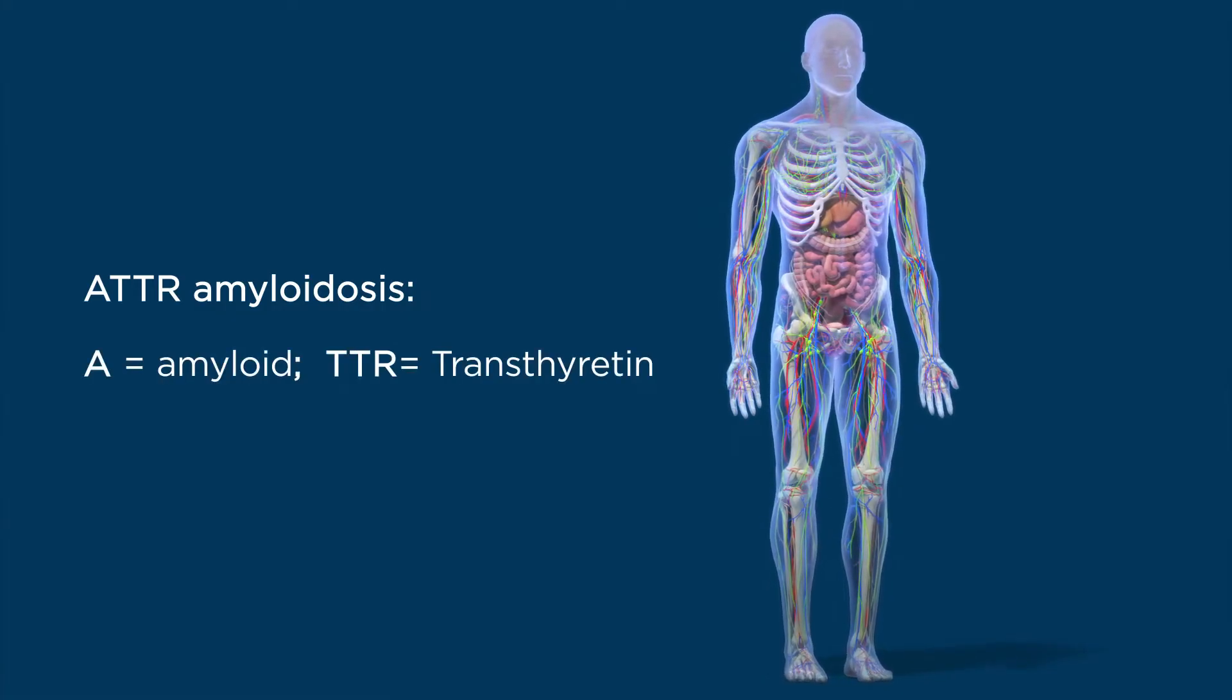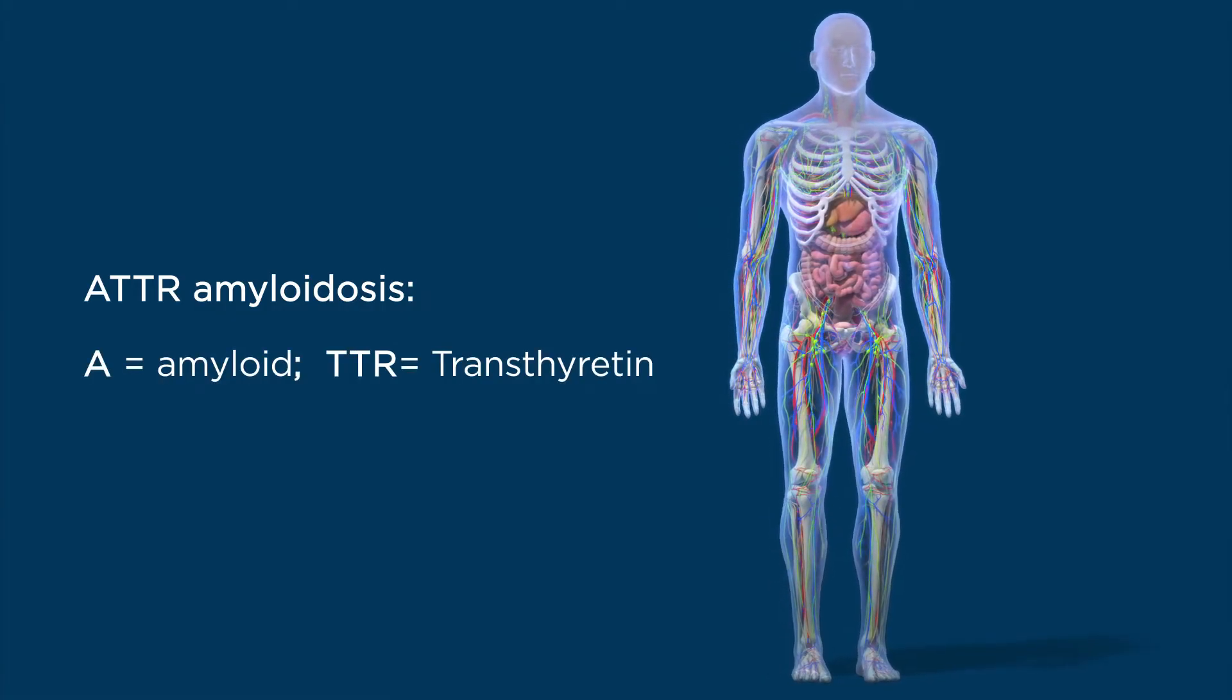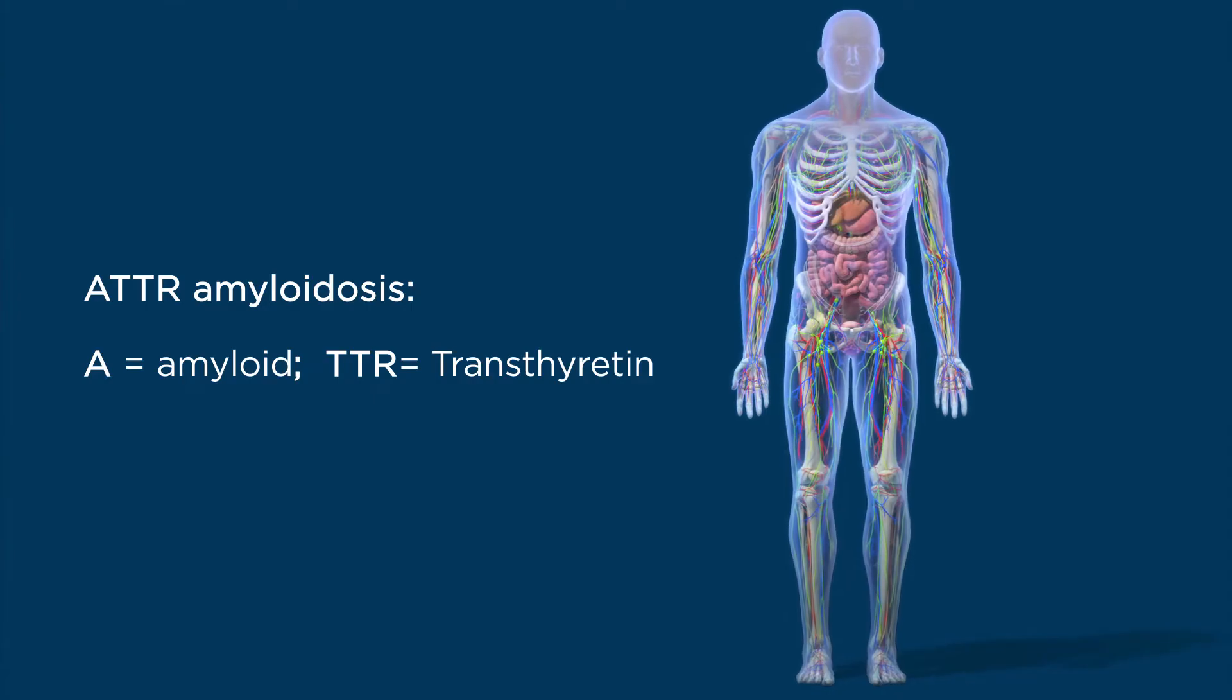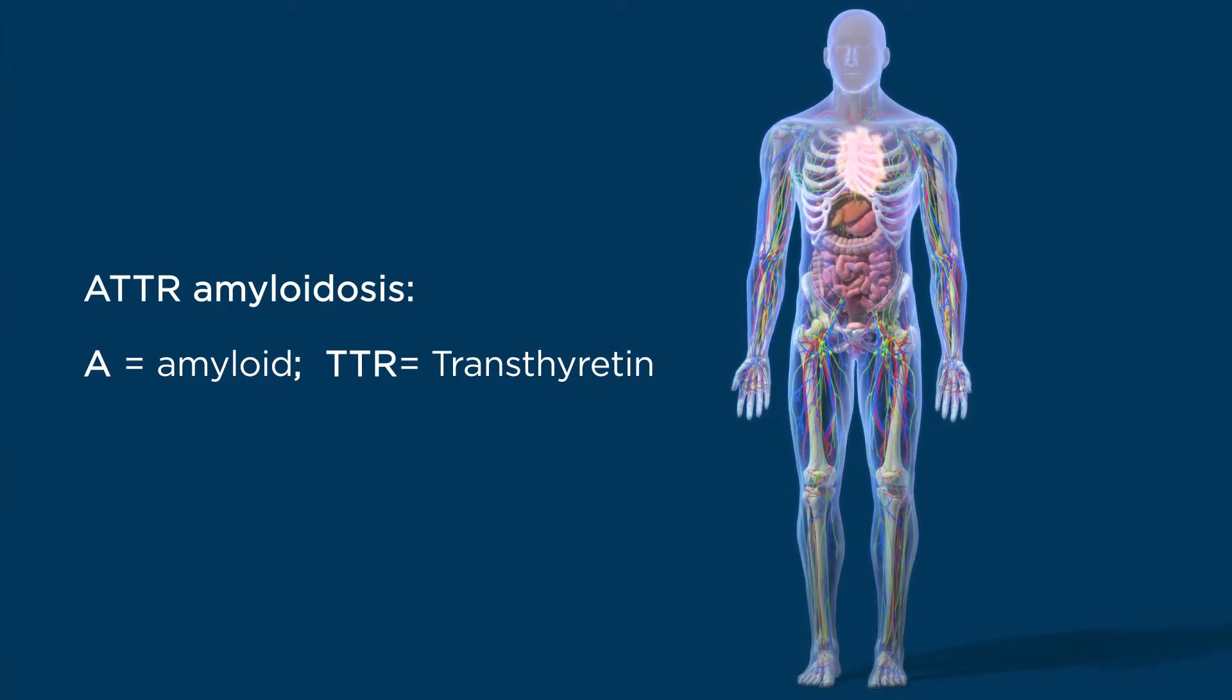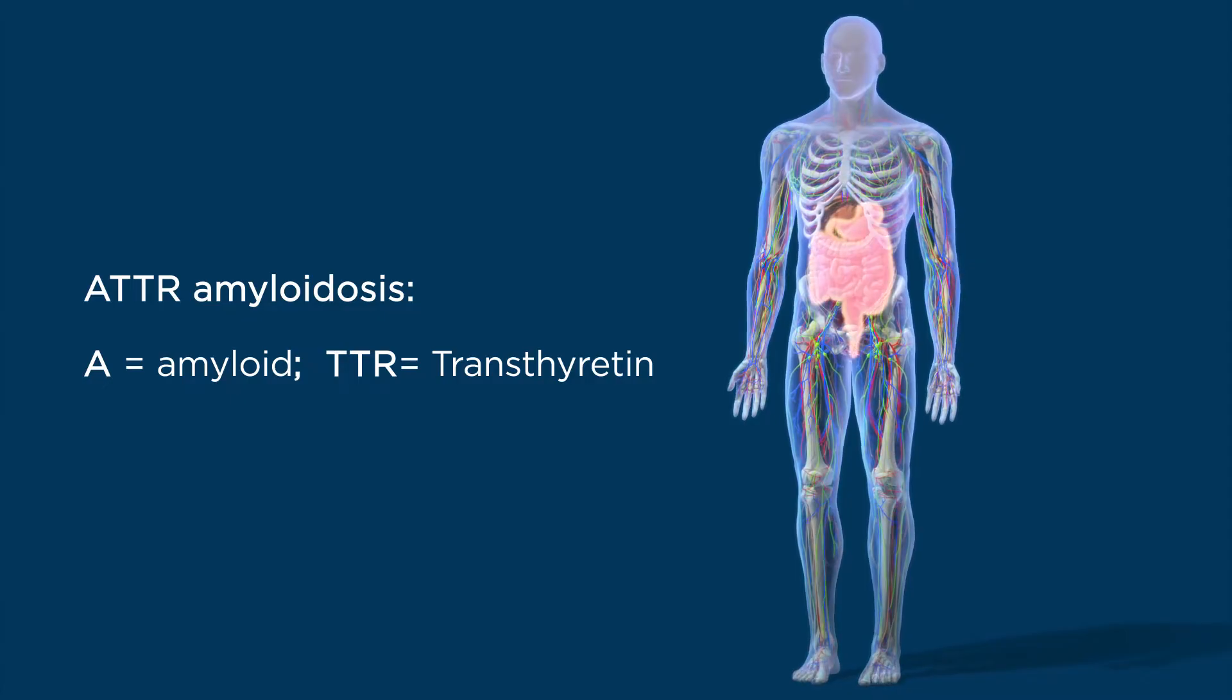ATTR amyloidosis is caused by the misfolding of a protein called transthyretin or TTR, which aggregates and deposits as amyloid in various tissues and organs.